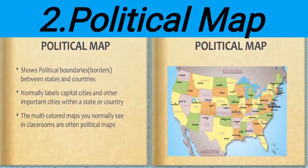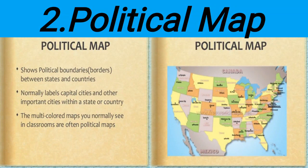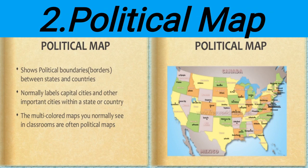This is our second major type of map. These types of maps show us the boundaries or border lines between different states or countries; they are called political maps. Normally, political maps label capital cities and other important cities within a state or country and show the borders between states and countries. For example, Pakistan shares its border with China, India, Iran, and Afghanistan. If you want to see the border lines or boundaries between different countries, you will use a political map.